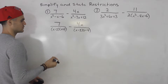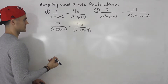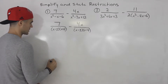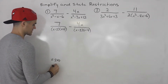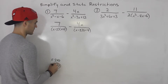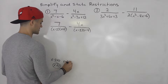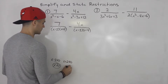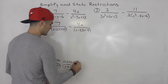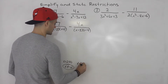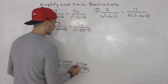So after you factor, you want to state the restrictions. Notice x minus three cannot equal zero, so x cannot equal positive three. Then x plus two cannot equal zero, which means x cannot equal negative two.